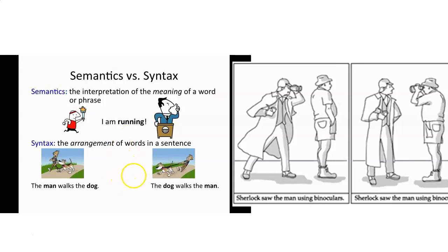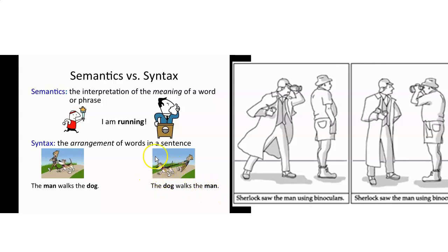Syntax is just the way that a sentence is worded or the order in which the words are arranged, which affects how we interpret it. For example: 'The man walks the dog' — the man is the one walking. But 'The dog walks the man' — now the dog is walking the man. We interpret that differently because the order of the words is different. That's what we mean by syntax.